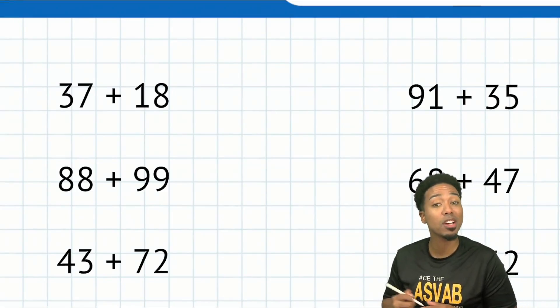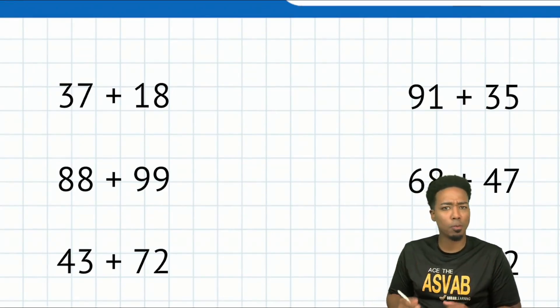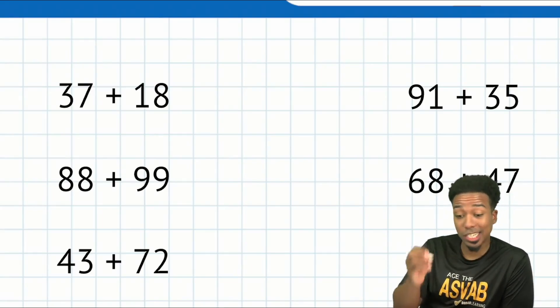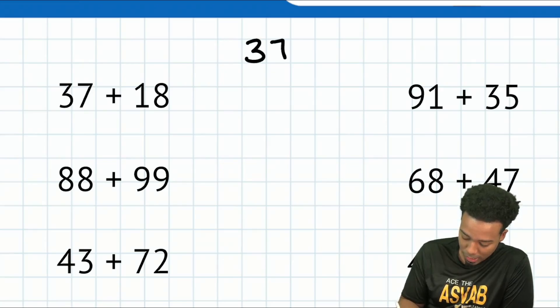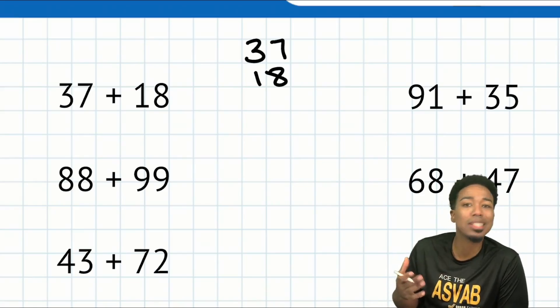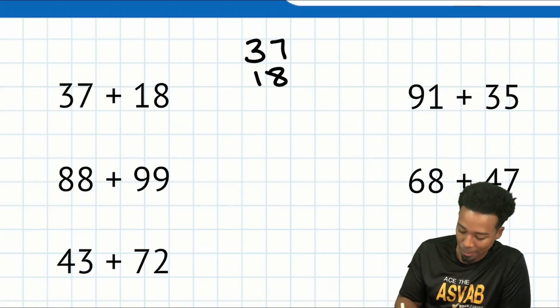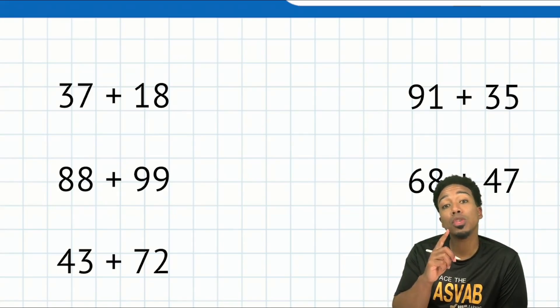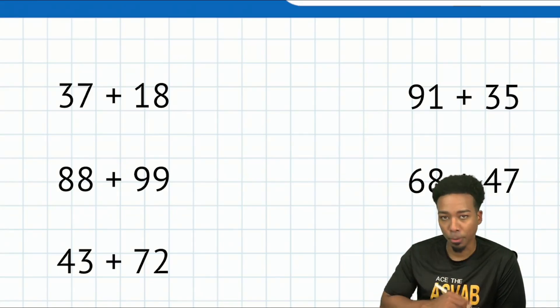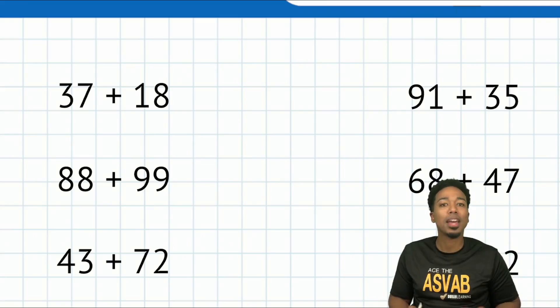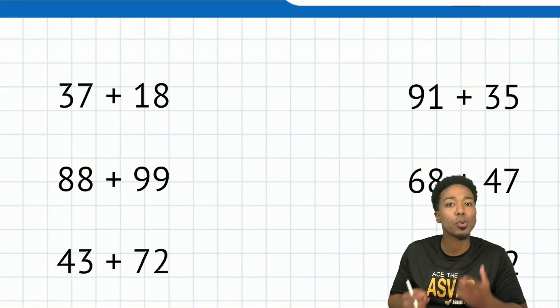Let's start off with 37 plus 18. When we're trying to do mental math, what can we do to save time? Well, I'll tell you right now, it's not going to be doing this. Writing anything down when you don't need to is a waste of time. So here's what we're going to do. I'm going to tell you right now that 37 and 18, we're going to do this thing called split and glue. I'm going to split the numbers up into easier numbers to look at and then glue them back together.